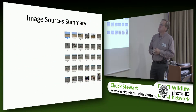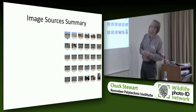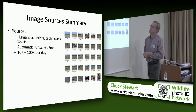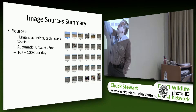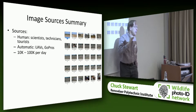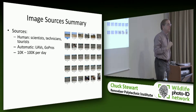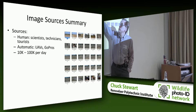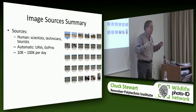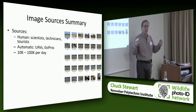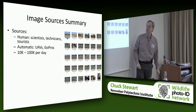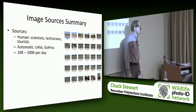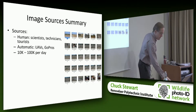There are huge numbers of image sources — field scientists, technicians, tourists, camera traps, UAVs — and we also mounted GoPros at high resolution and lower frame rates on safari vehicles. Now you get an enormous volume of data. At one conservancy, we might reasonably collect close to 100,000 images a day.